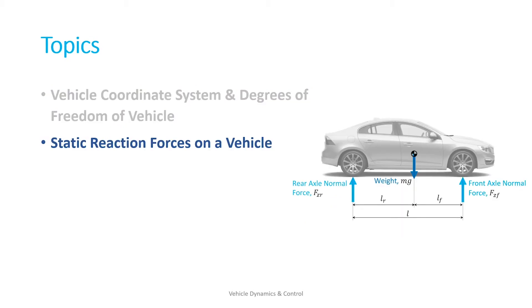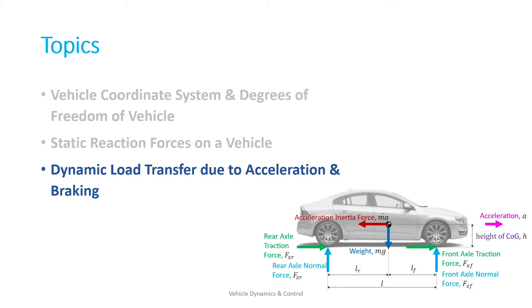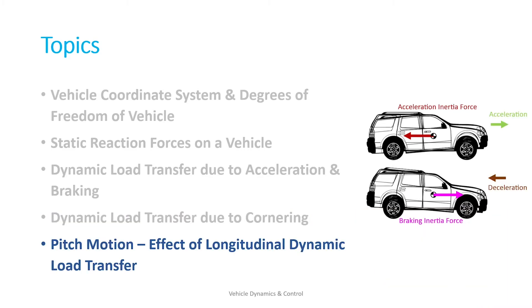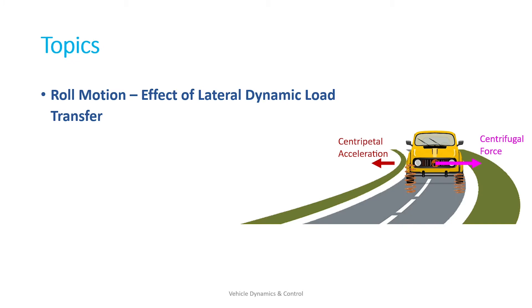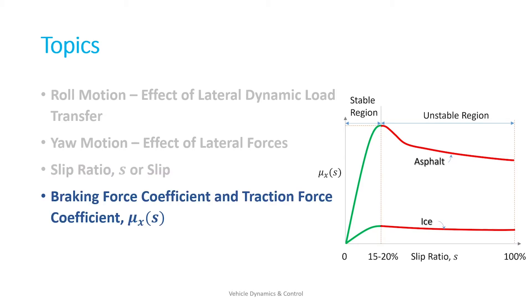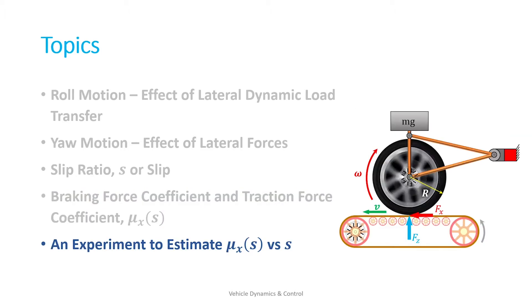We will look into the static reaction forces on a vehicle, then the dynamic load transfer due to acceleration and braking, and more details of pitch motion, roll motion, and yaw motion. And then we will see the concept of slip ratio or slip, the braking force coefficient and traction force coefficient, and a detailed explanation of the mu-slip curve. To get a deeper insight into the mu-slip curve, an experiment facility is explained which could estimate the mu-slip curve.